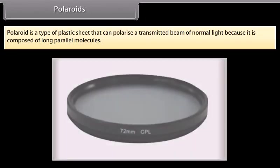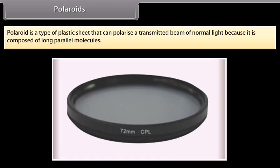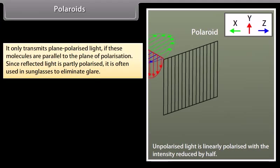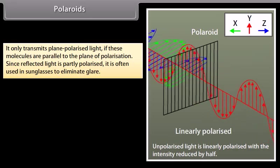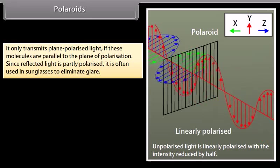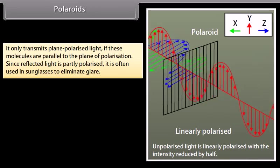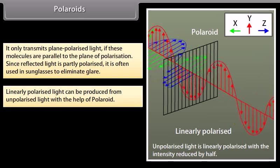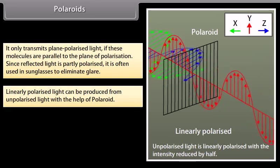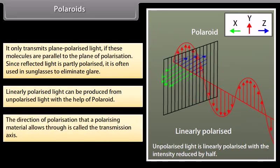A polaroid is a type of plastic sheet that can polarize a transmitted beam of normal light because it is composed of long parallel molecules. It only transmits plane polarized light if these molecules are parallel to the plane of polarization. Since reflected light is partly polarized, polaroids are often used in sunglasses to eliminate glare. Linearly polarized light can be produced from unpolarized light with the help of a polaroid. The direction of polarization that a polarizing material allows through is called the transmission axis.